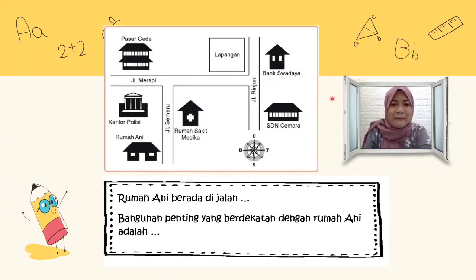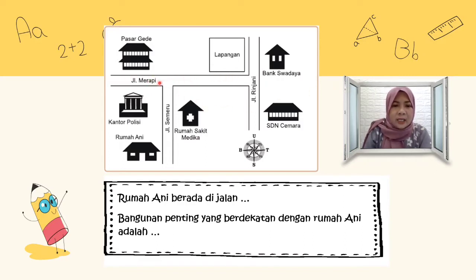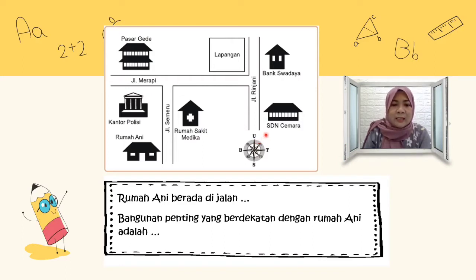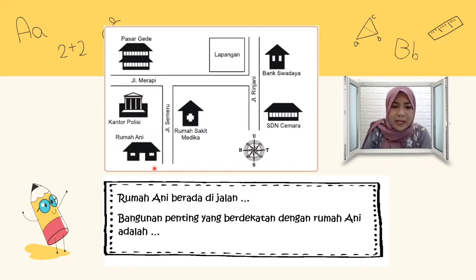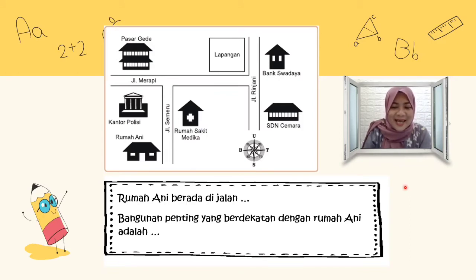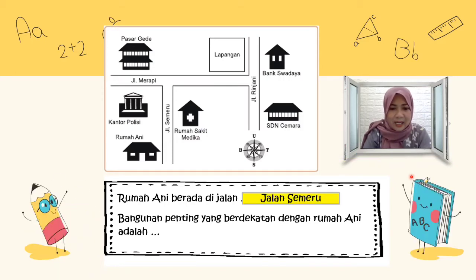Sekarang ada peta lagi. Ada pasar gede, ada juga bank, ada lapangan, ada SD di sana. Ada jalannya — persimpangannya banyak ya. Ini ada jalan Merapi, kemudian ada jalan Semeru, dan di sebelah sini ada jalan Rinjani — menggunakan nama-nama gunung ya anak-anak. Yuk kita mengerjakan soalnya. Yang pertama: mana rumah Ani? Coba tunjukkan. Ini dia rumah Ani yang ada di bawah. Rumah Ani berada di jalan apa anak-anak? Lihatlah rumah Ani — yang berada di sebelahnya itu jalan Semeru. Kita buktikan apakah betul jalan Semeru. Iya betul, jalan Semeru.